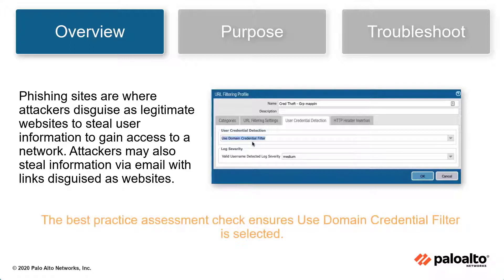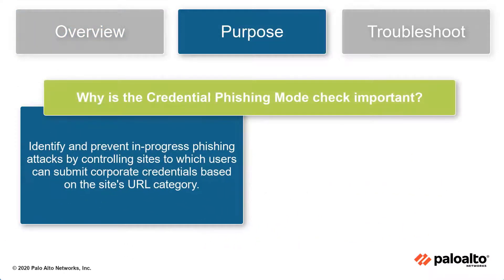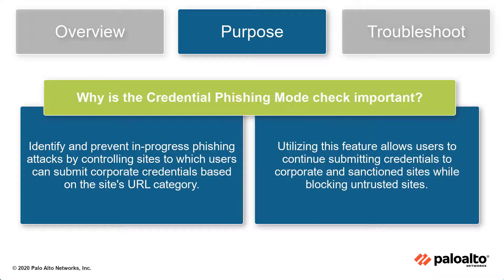The Credential Phishing Mode Best Practice Check ensures that the Use Domain Credential filter is selected. Identify and prevent in-progress phishing attacks by controlling sites to which users can submit corporate credentials based on the site's URL category. This allows users to continue submitting credentials to corporate and sanctioned sites while blocking untrusted sites.